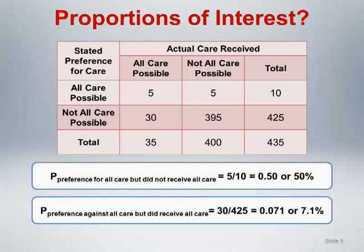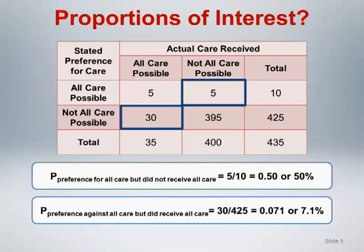If our goal is to measure evidence of a discrepancy between what was preferred and what was received, it's important to realize that subjects who received the care that they preferred do not provide evidence of a discrepancy. The evidence for a discrepancy comes only from subjects who did not receive their stated preference. Thus, the cells in the table that we need to focus on are the 5 subjects who preferred all care possible but did not receive it, and the 30 subjects who received all care possible but did not state a preference for that care.